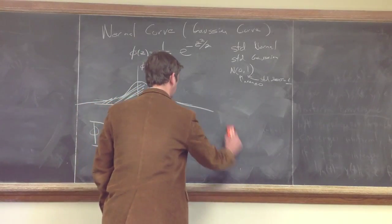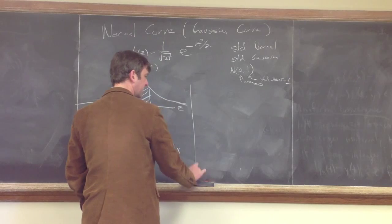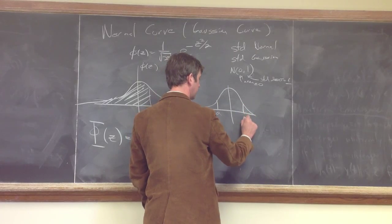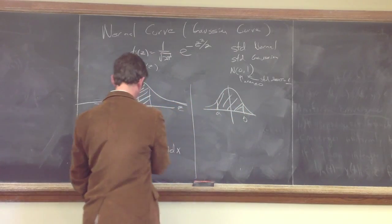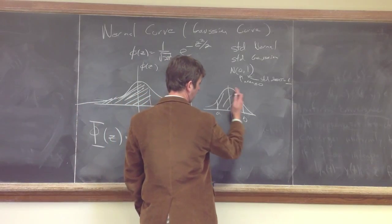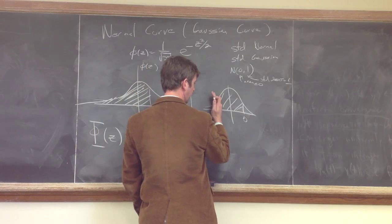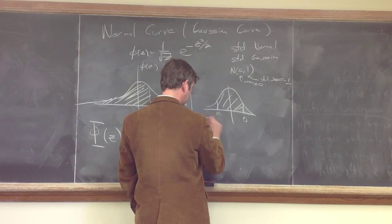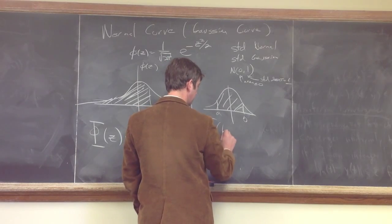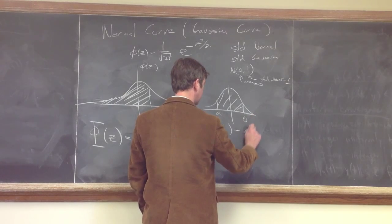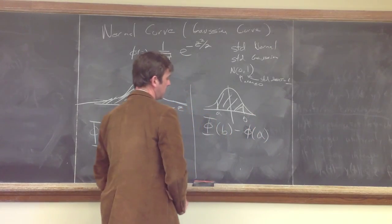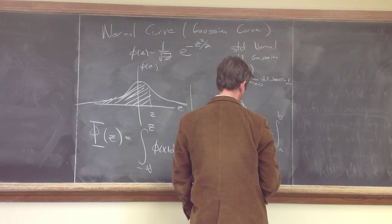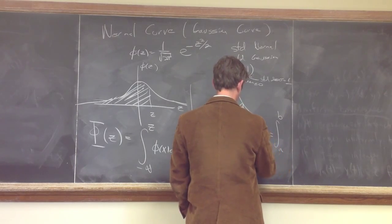If you only want the area from a to b, the way you can do that is: first calculate the area all the way up to b, then calculate the area all the way up to a, and subtract the area up to a from the area up to b. So that would be Phi of b minus Phi of a equals the integral from a to b of phi of z dz.